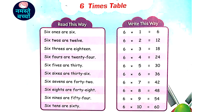6 3's are 18, 6 4's are 24, 6 5's are 30.